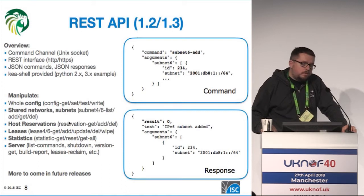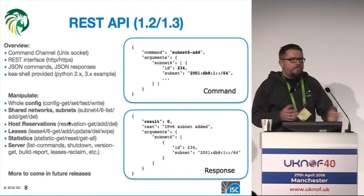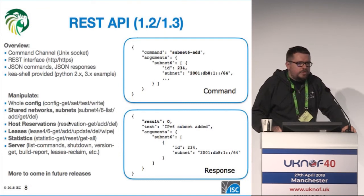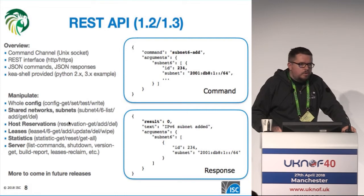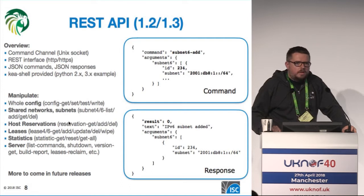But also sometimes you don't want to change everything upside down. You have, like, a thousand subnets configured and you want to add another one — there's an API for this. The whole API uses JSON format, so it's very easy to use either with the tool we provided as an example, but this is just JSON over either Unix socket or HTTPS, so you can use any environment to generate those. In many deployments, our customers and end users are successful with their own implementations.